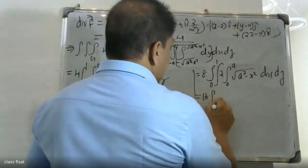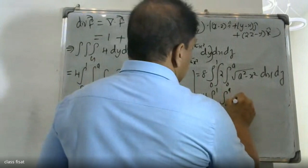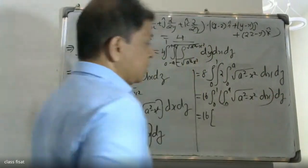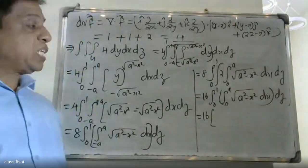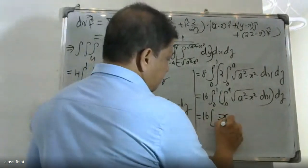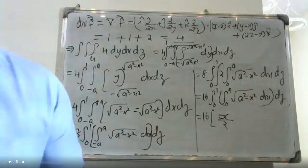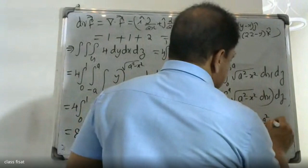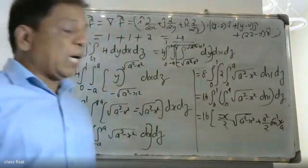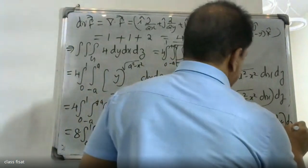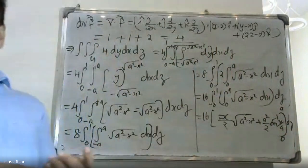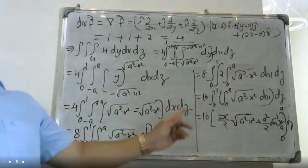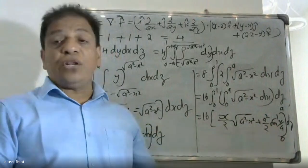Applying the even function property, we get 16 times the integral from 0 to 1 times the integral from 0 to s of root of (s squared minus x squared) dx dz. The standard formula for the integral of root of (s squared minus x squared) is: x/2 times root of (s squared minus x squared) plus s squared over 2 times sine inverse of (x over s), plus constant.